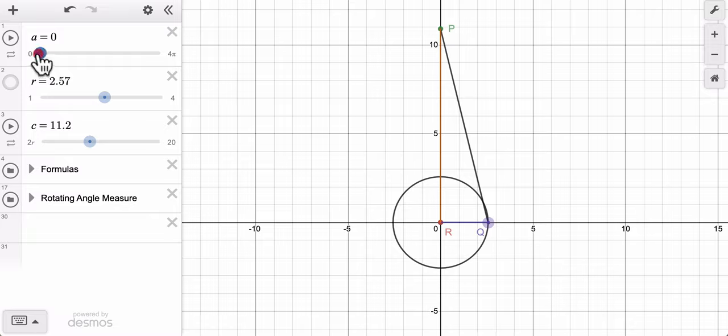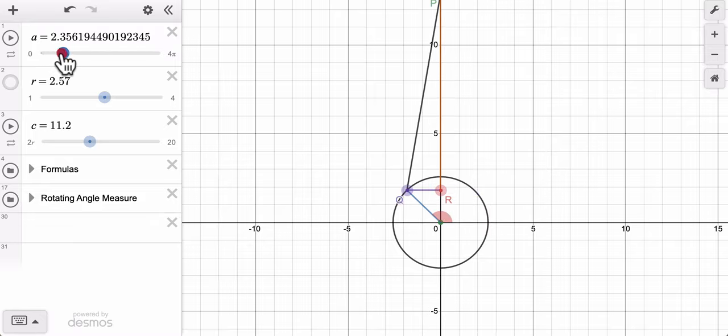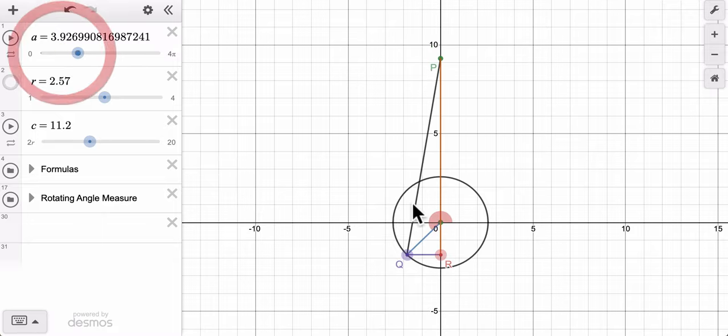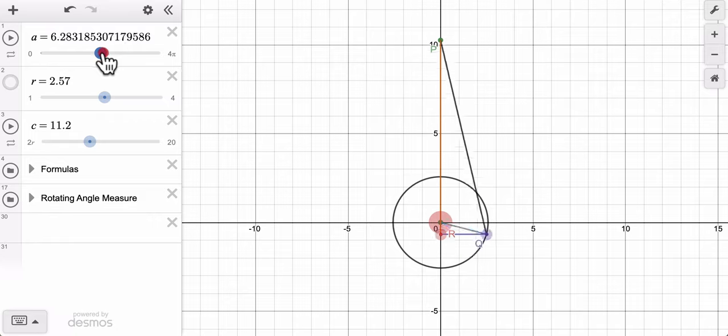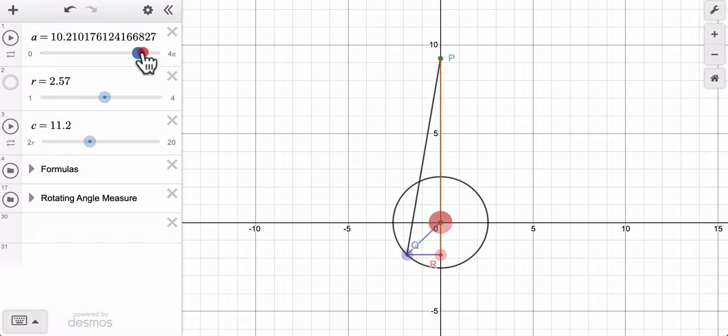You also might take on the challenge of having it shade in the angle as you turn around. So what is the value of A? I want to be able to see it. You can see there it's shading it. And I would say we have it do it up to two rotations, so that on the second rotation, you can see there's a darker region shaded, indicating that I'm spinning around a second time. So it's a nice little challenge there as well.